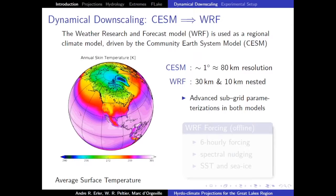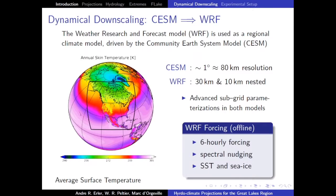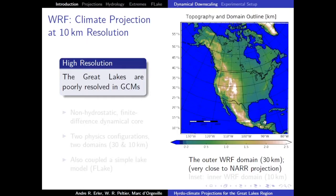CESM is a GCM with a resolution of about one degree, whereas we run WRF at 30 kilometers in the outer domain over North America, and then an inner domain with 10-kilometer resolution. This is a map of the outer domain, very similar to the NAR projection. In CESM and many other GCMs, the Great Lakes are essentially non-existent, even though they may have some lake parameterization. But in a regional model, there are many grid points representing the lakes, so there's potential for a strong lake effect.